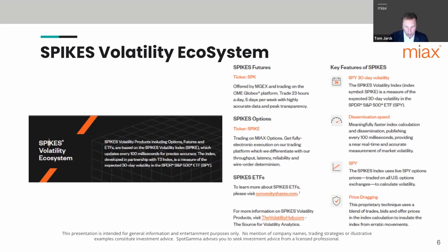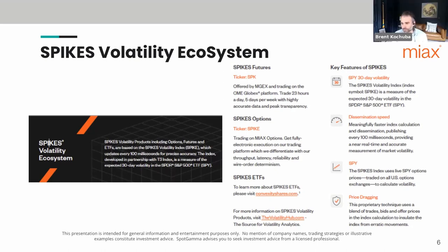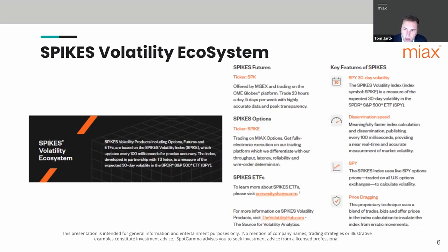SPX options and SPY options are both on the S&P 500, so they track each other very closely. What we've done with the Spikes volatility index is implement a price-dragging mechanism — when taking prices into the calculation, we don't just use the mid; we also take into account the last trade price. This prevents the random big spikes up or down that you sometimes see in the VIX, which can be caused when one exchange widens its bid-offer spread extremely, causing a drastic move in that index's calculation.